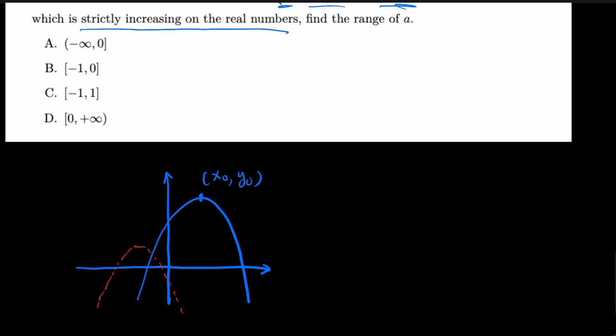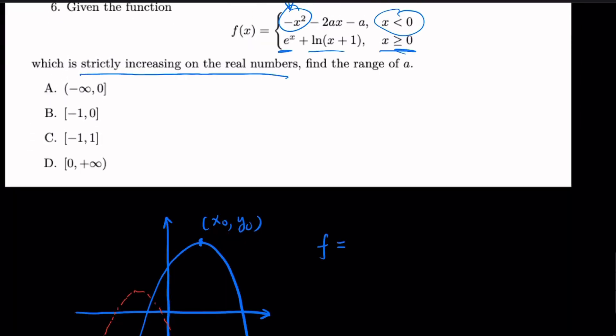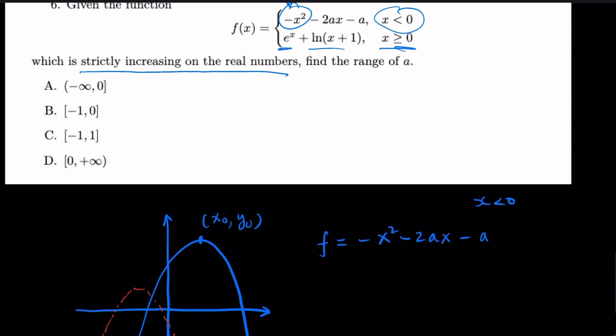Let's figure it out through algebra. So f, in this case, equals negative x squared minus 2ax minus a. Of course, x is a negative number here. We can complete the square by looking at x squared plus 2ax plus a. By completing the square, what you get is (x+a)².